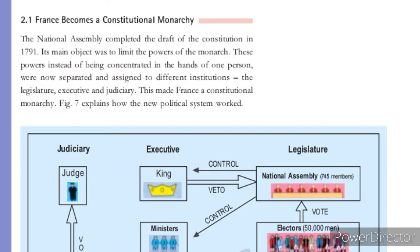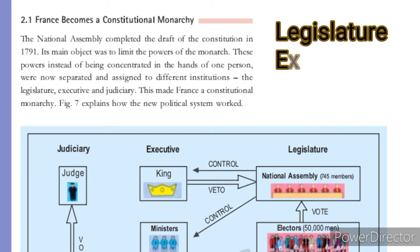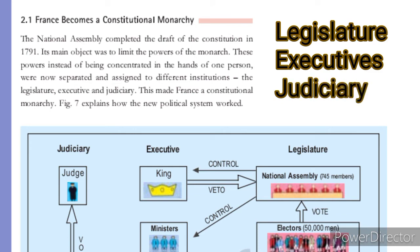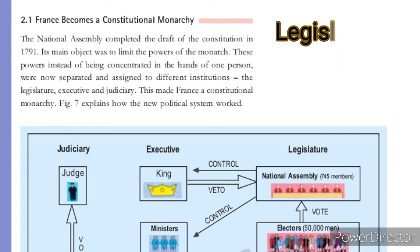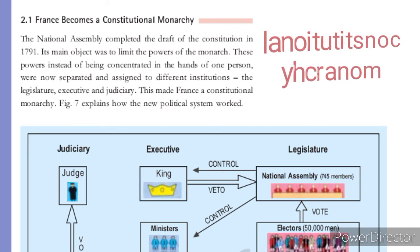The next subtopic is how France became a constitutional monarchy. The National Assembly completed the draft of the constitution in 1791. Its main objective was to limit the power of the monarch. The new constitution gave a final blow to absolute monarchy — instead of powers being concentrated in one hand, they were now separated and assigned to different institutions: the legislature, the executive, and the judiciary. This change of power made France a constitutional monarchy, meaning the monarchy had to follow constitutional principles.